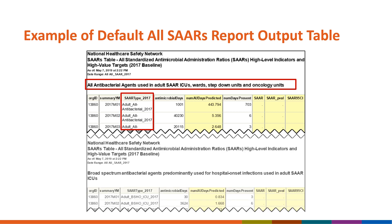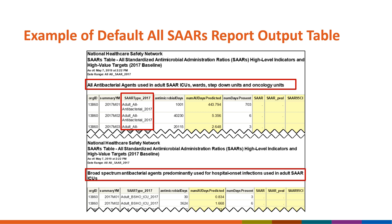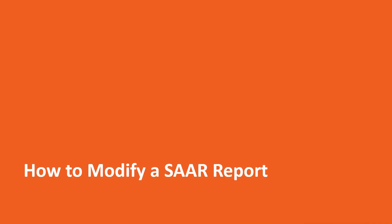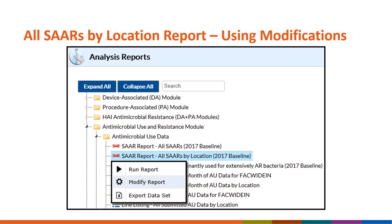For example, the second SAR table is broad-spectrum antibacterial agents predominantly used for hospital-onset infections used in adult SAR ICUs. Please note, these data are for example only. Now let's run the All SARs by Location report with some modifications. From the Analysis Reports page, select SAR Report All SARs by Location 2017 Baseline.